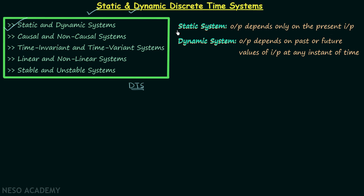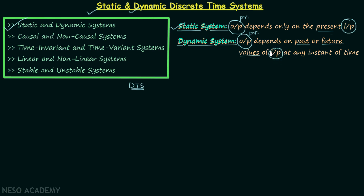A system is said to be a static system if the present output depends only on the present values of input. On the other hand, a system is said to be a dynamic system if the present output depends on the past or the future values of input at any instant of time. This point — 'at any instant of time' — is very important to understand.